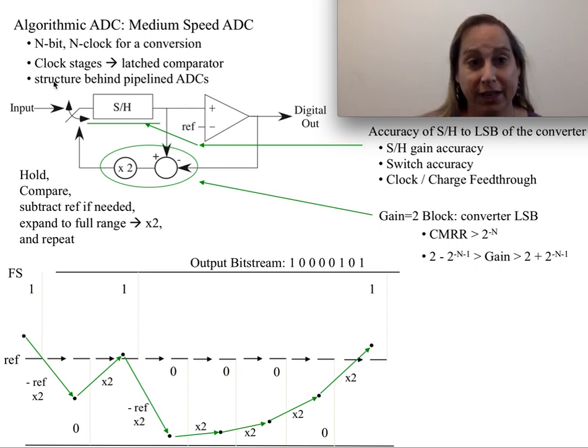It's also relevant that there's a whole stage of pipeline ADCs where the average latency is still this order N time in terms of number of comparators, but the overall latency, the per sample latency, is actually every single clock cycle.